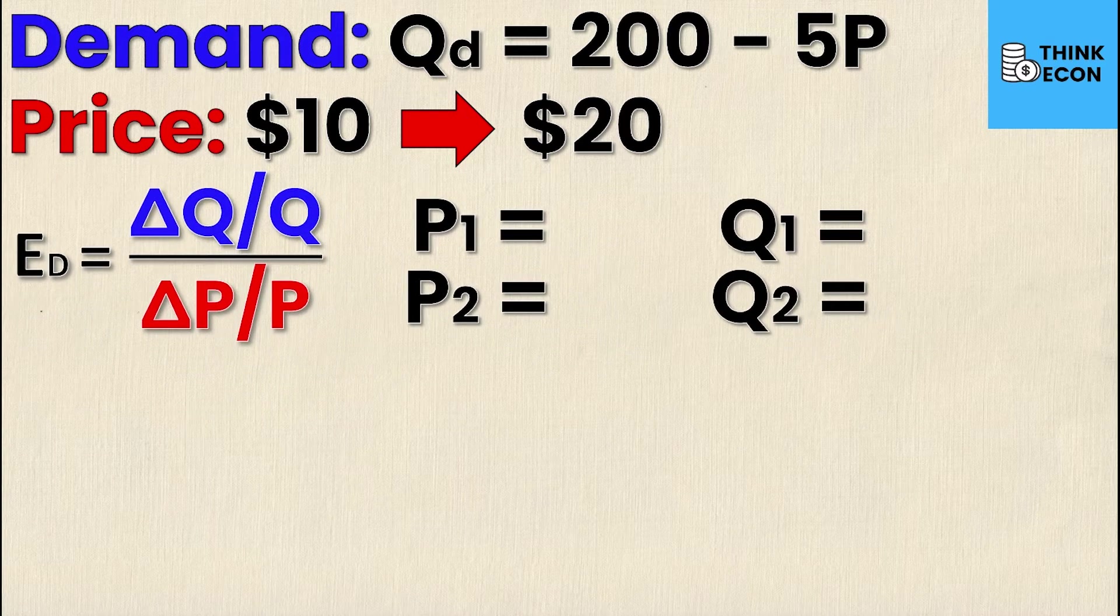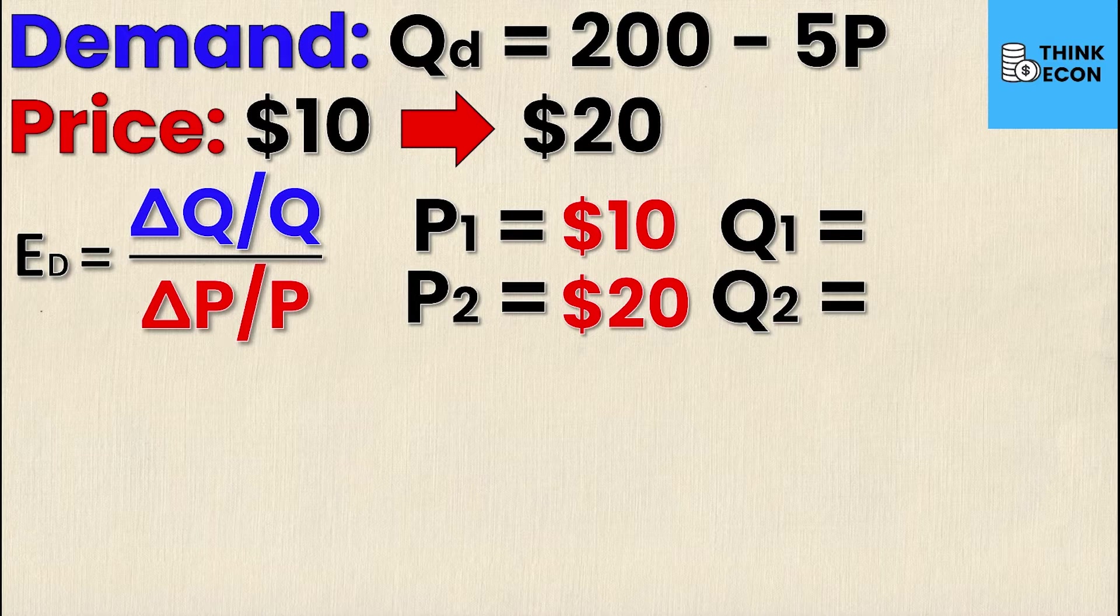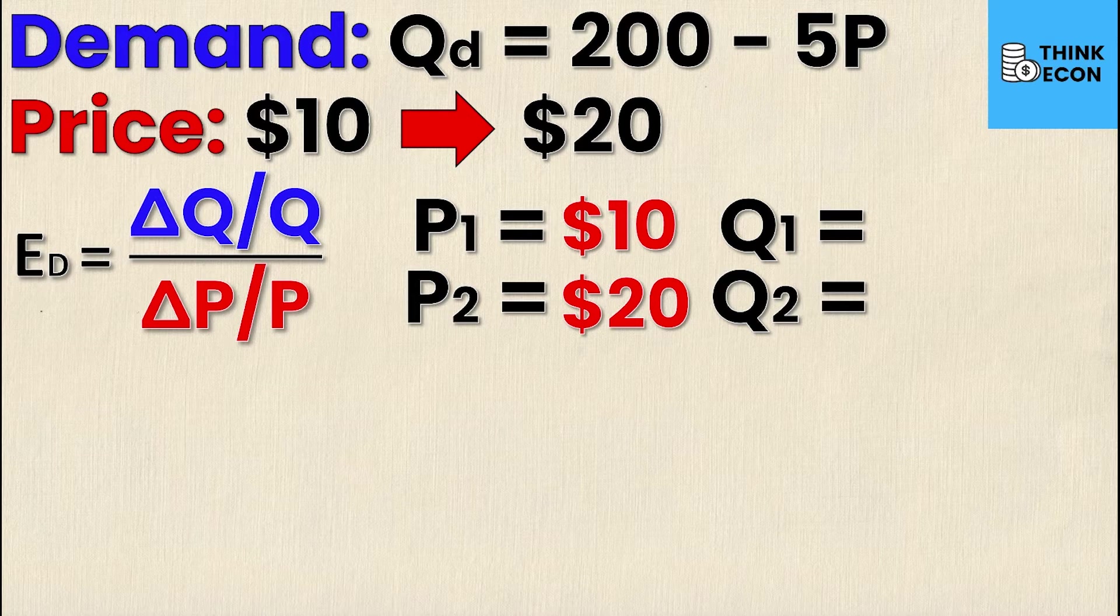Well luckily for us, the new P and the old P are already given to us and they're simply $10 and $20. However, we need to calculate the old quantity and the new quantity. To do that we're simply going to substitute in the old and new prices, P1 and P2, into the demand equation one at a time, and that's going to yield us Q1 and Q2 respectively.